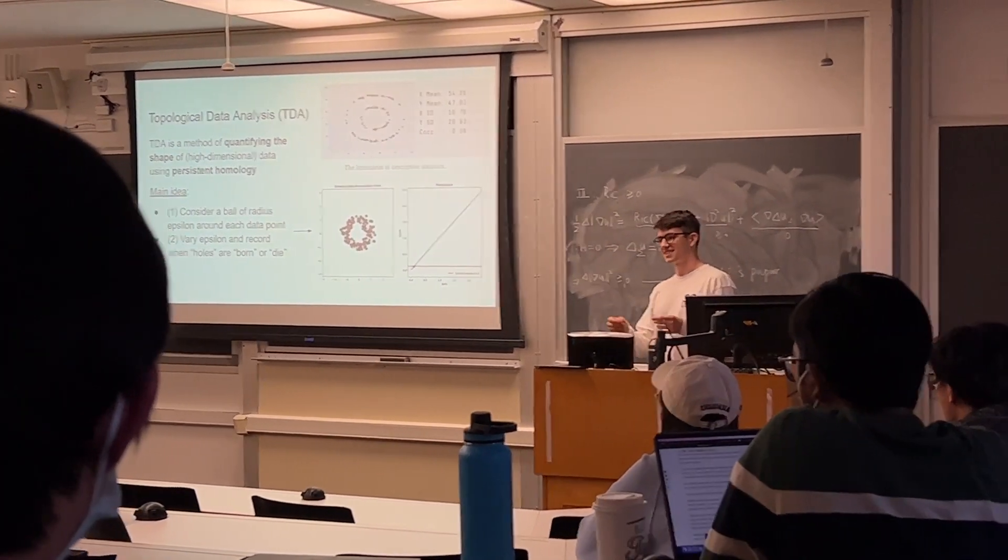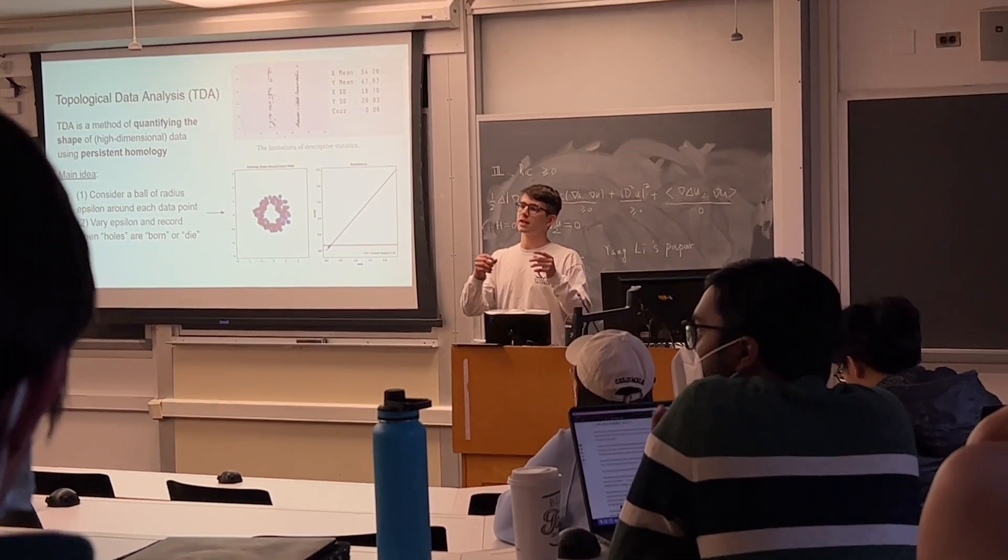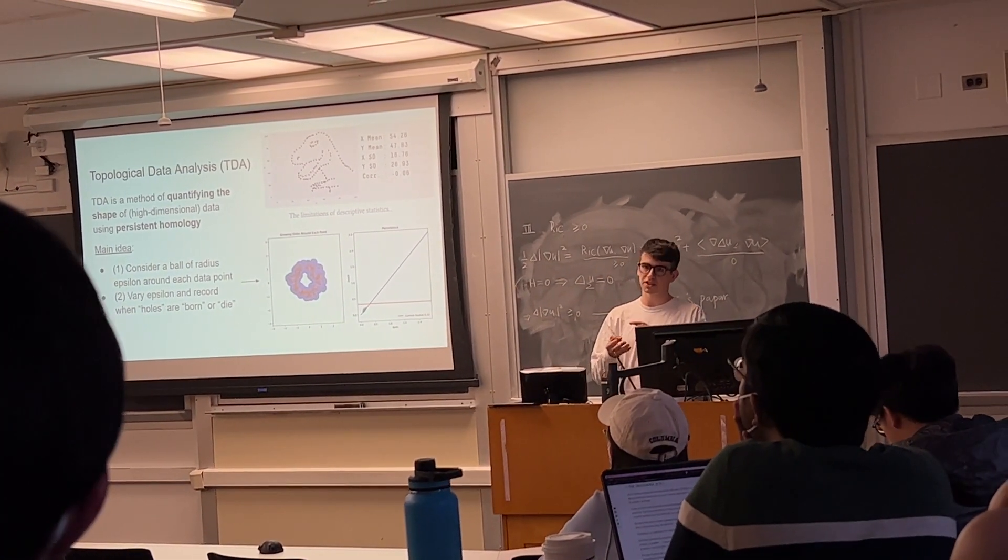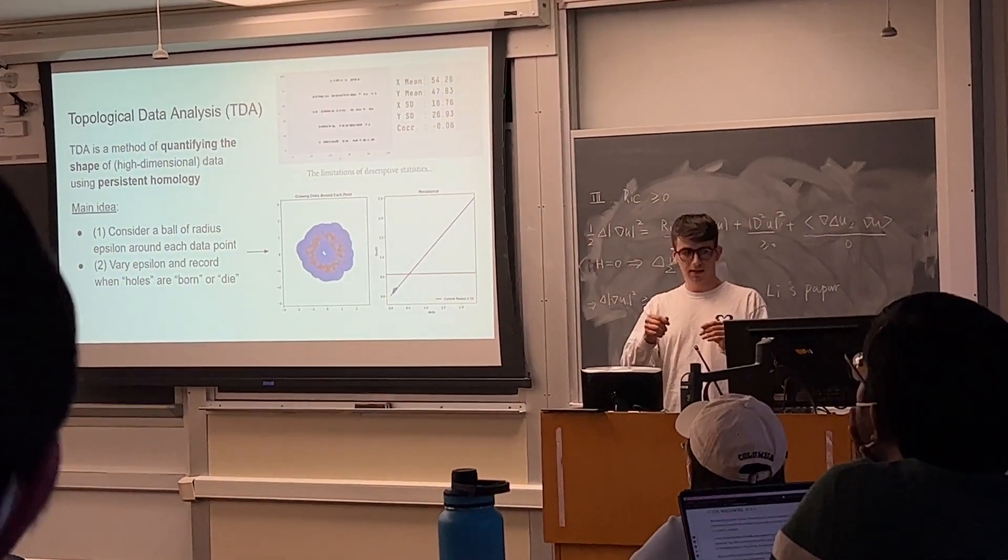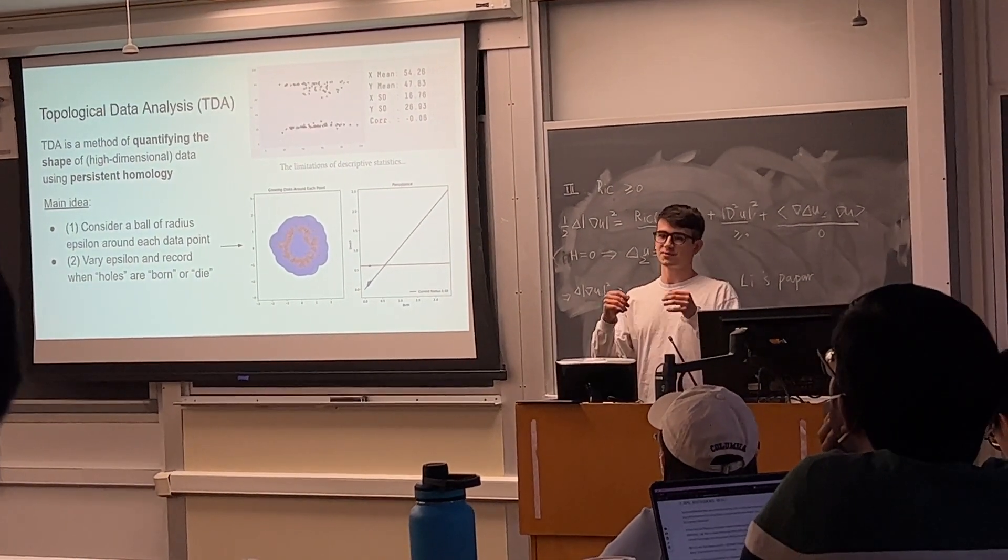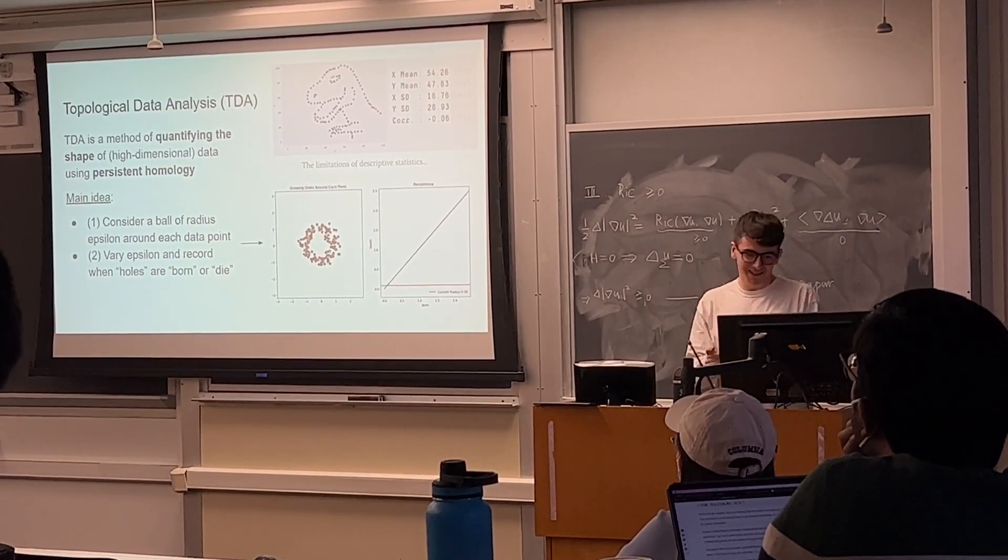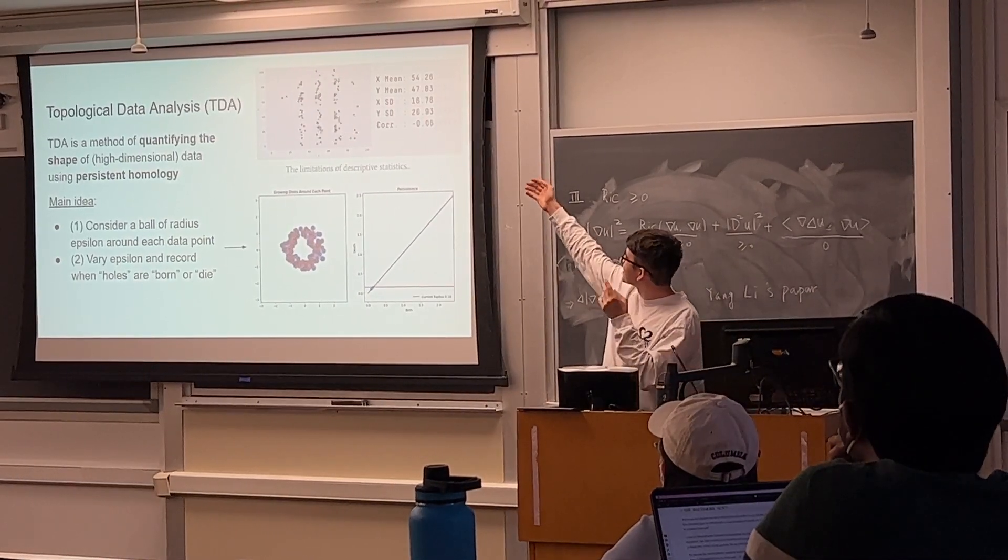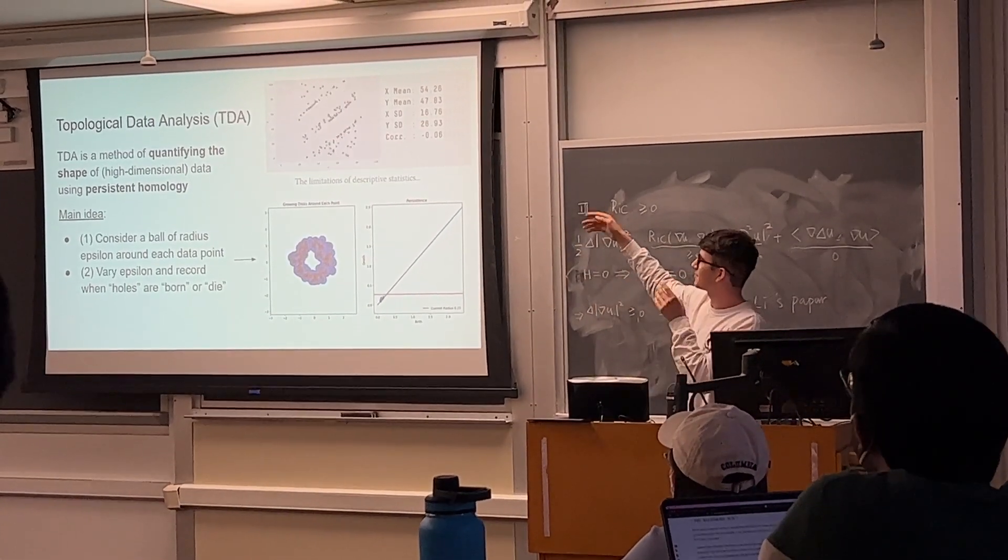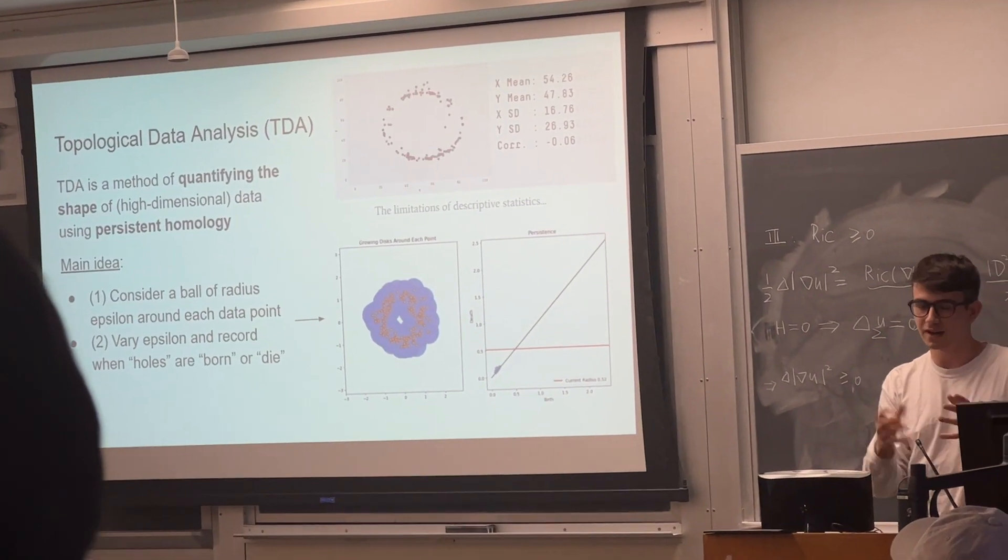Topological data analysis is this method of looking at data that is distinct from your normal statistical methods where you look at means or standard deviations or further moments. The idea is that you quantify the shape of your data using methods from an area of pure math called topology. This first figure illustrates the limits of descriptive statistics because you can morph and make many different shapes but have the same metrics.